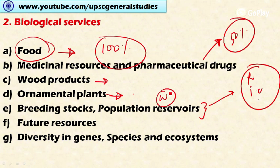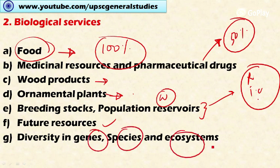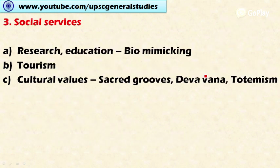If you want to breed climate-resistant, temperature-resistant, and water-resistant varieties of rice, you have to go back to the Eastern Himalayas and the Western and Eastern Ghats for genetic material resistant to those factors. Biodiversity also holds future resources and has diversity in genes, species, and ecosystems, helping meet any unforeseen consequences of the future. These are the biological services provided by biodiversity.